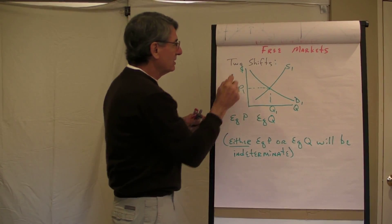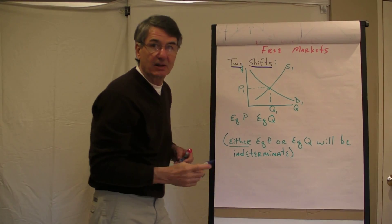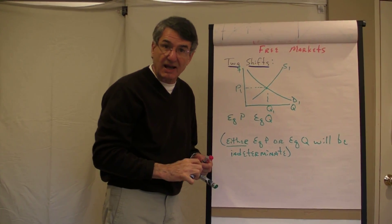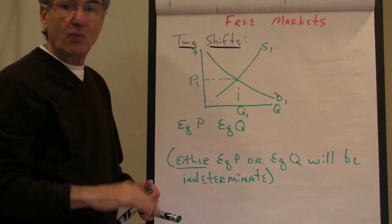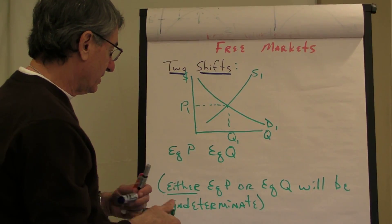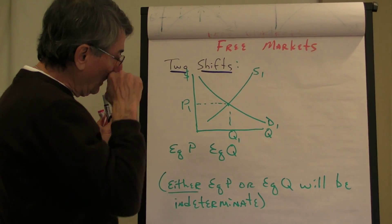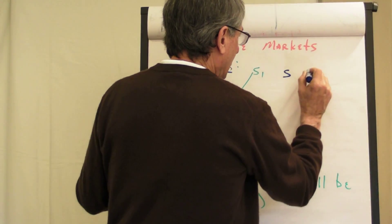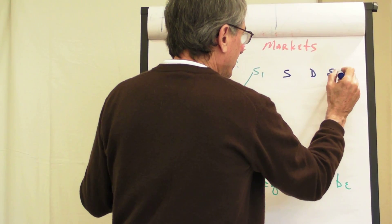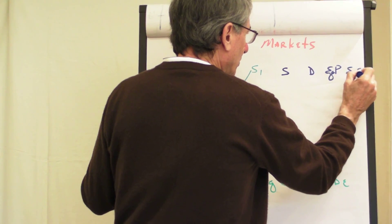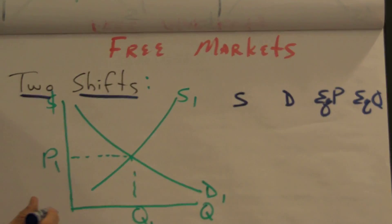Now, the question is, what if both supply and demand shift together at the same time? Then, that's one more degree of complication, but it's not a particularly big one. And the best way to look at it is supply, demand, equilibrium price, equilibrium quantity. This is the best way to do it, I think.